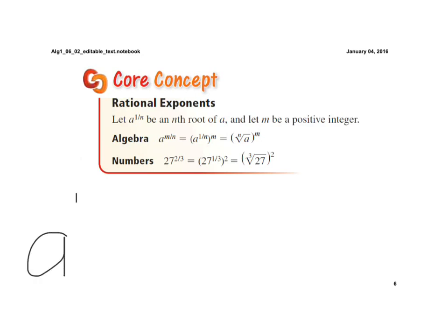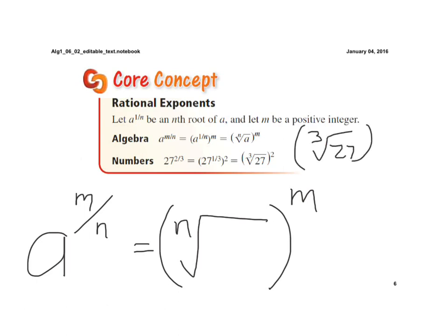And if I have a to the m over n, the denominator is my root, and the numerator is the power that I'm raising it to. So 27 to the two-thirds is the same as the cube root of 27 raised to the second power. So we can evaluate this, because the cube root of 27 would be 3, because 3 times 3 times 3 is 27, and then 3 squared would be a positive 9.